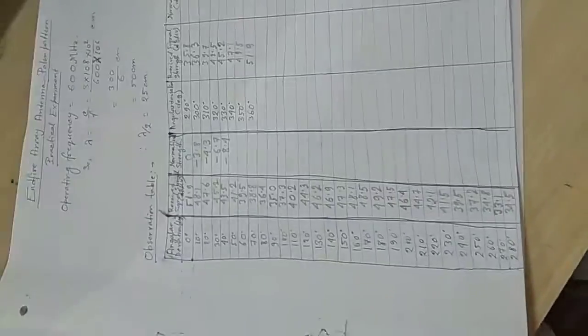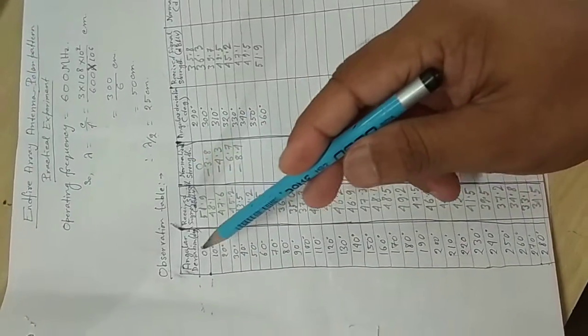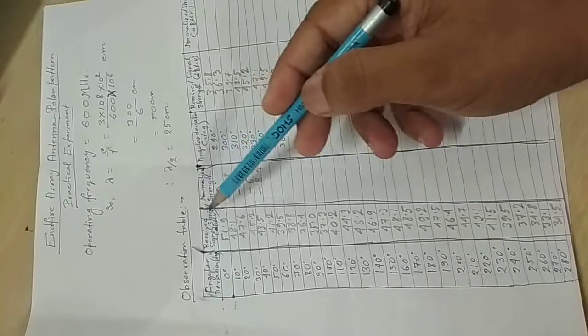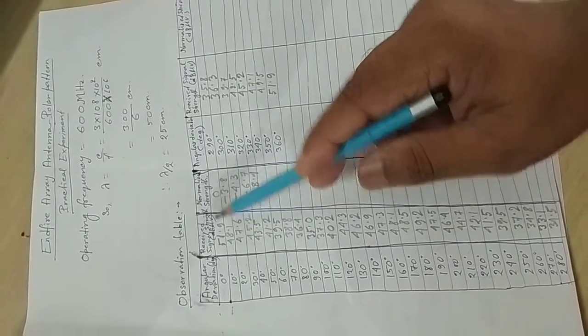Those values I have taken from the experiment look like this. The observation table from here shows 0 degree to 360 degree rotation, and corresponding received signal strength is also measured in dB microvolt.